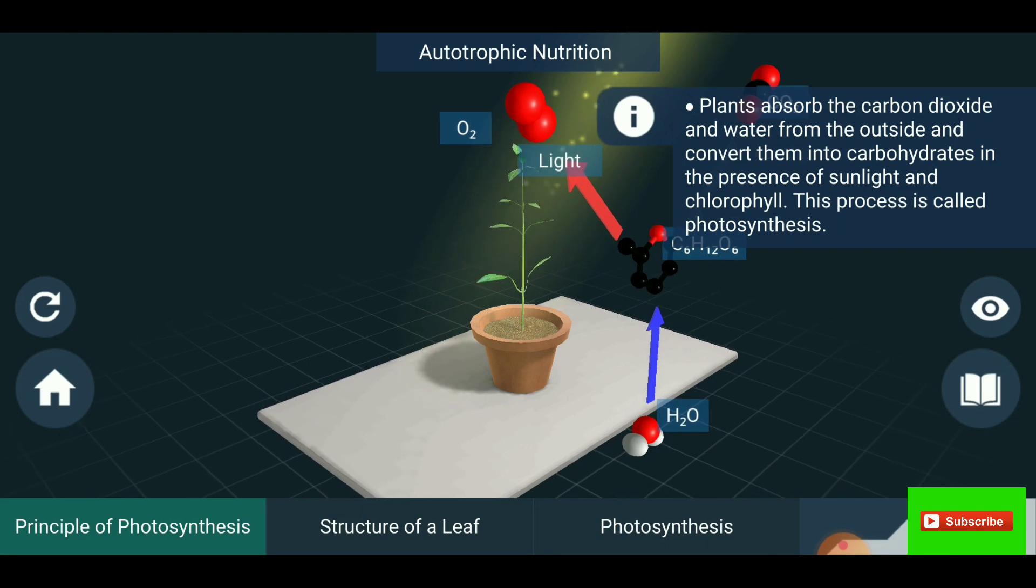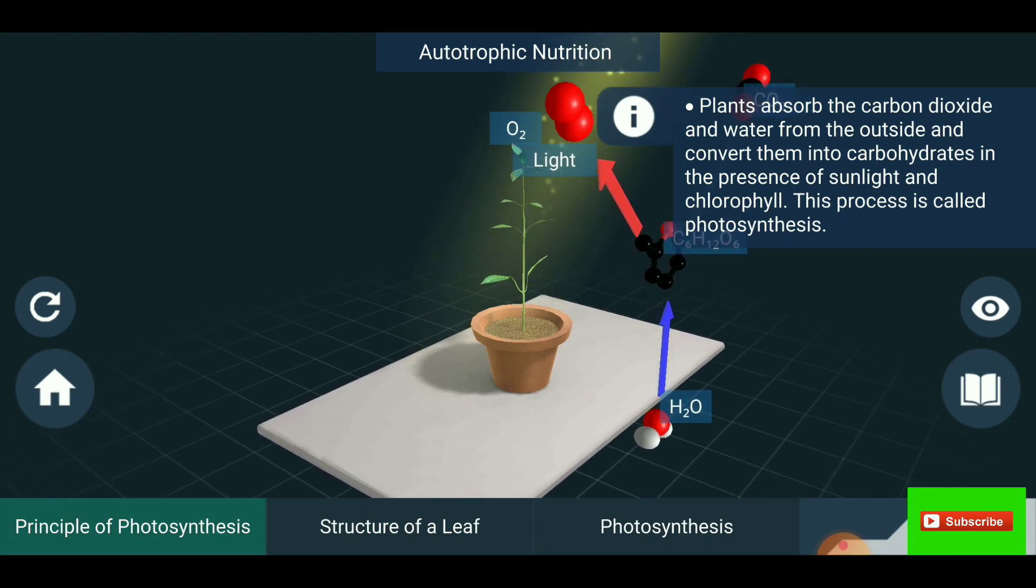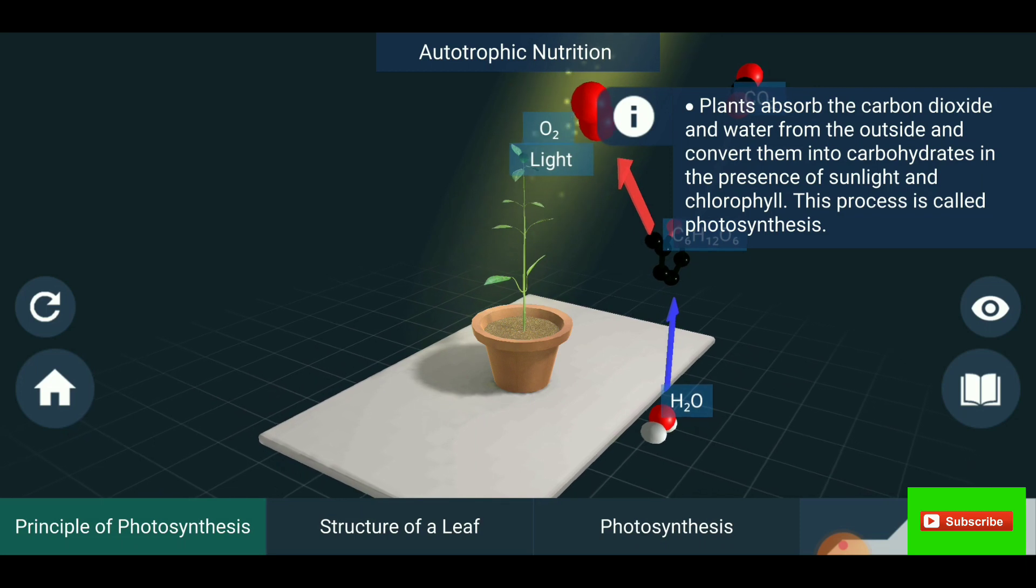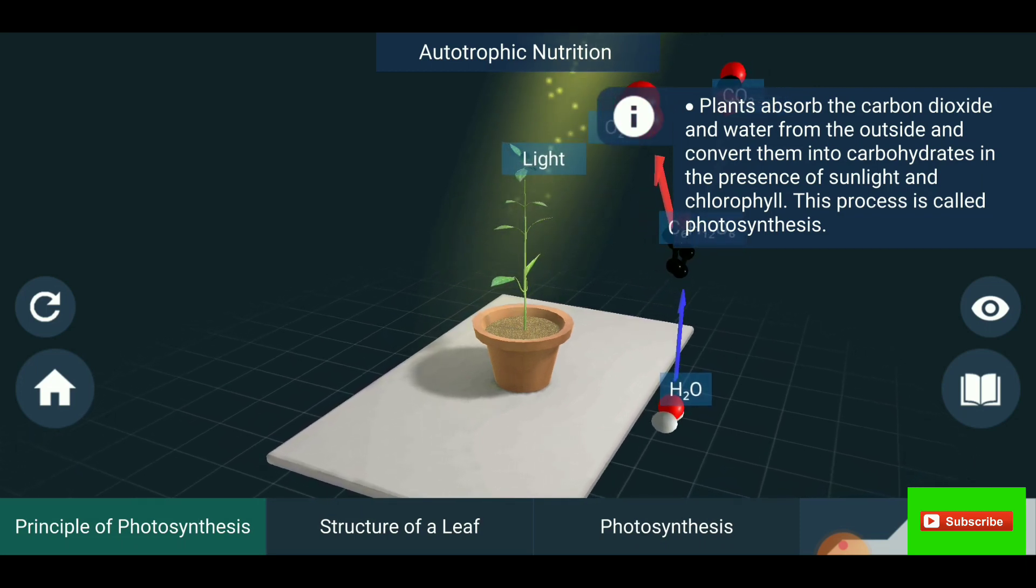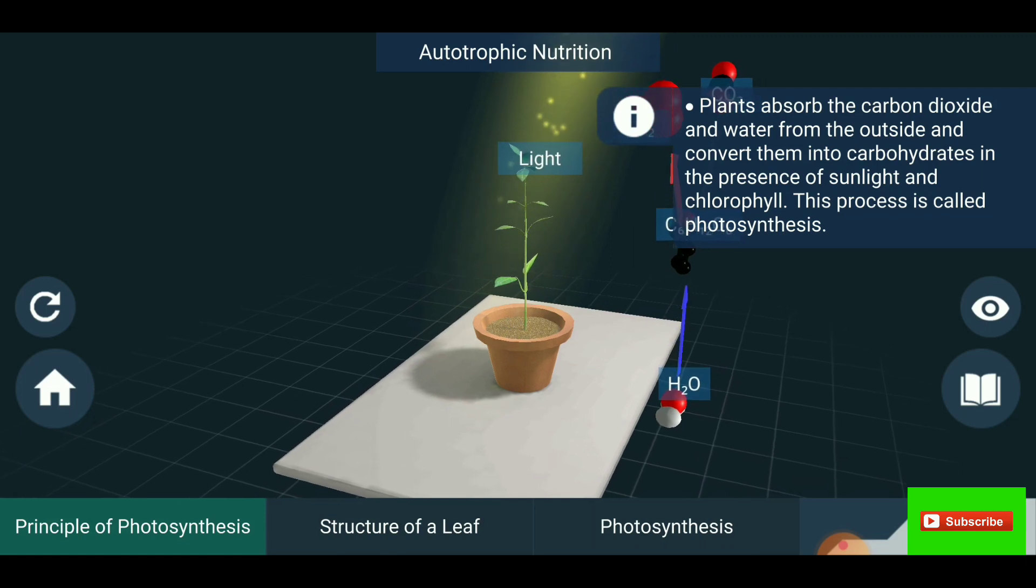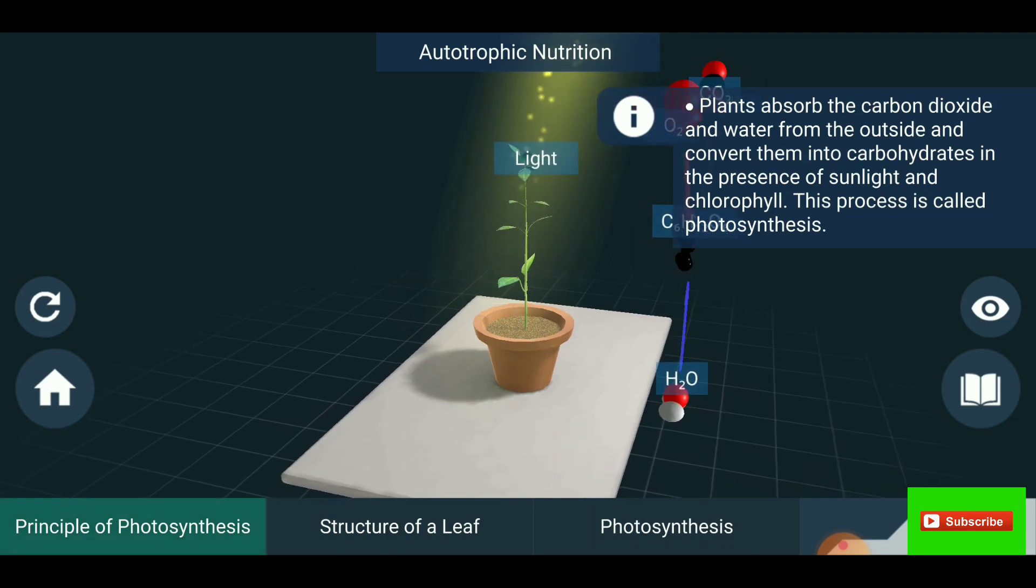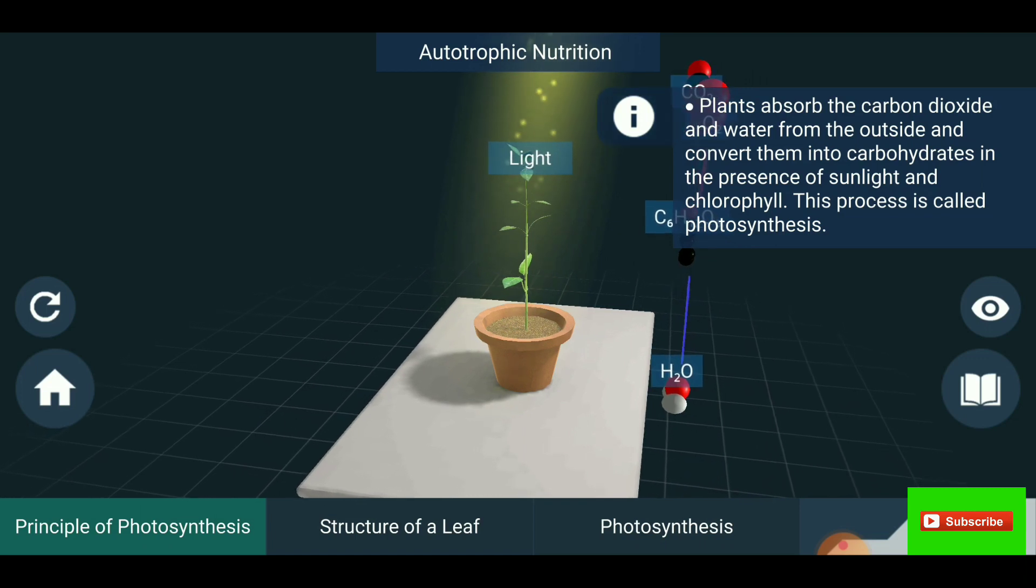You are seeing the principle of photosynthesis. Autotrophic nutrition - plants absorb the carbon dioxide and water from the outside and convert them into carbohydrates in presence of sunlight and chlorophyll. This process is called photosynthesis.